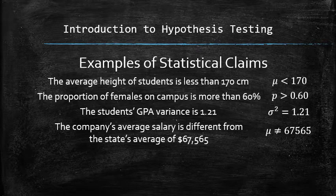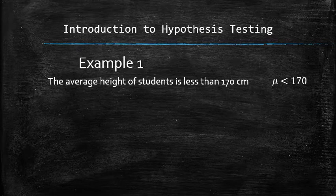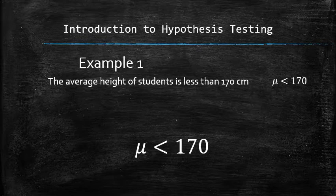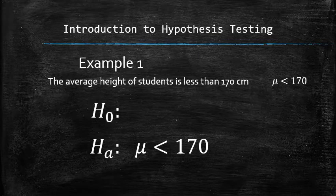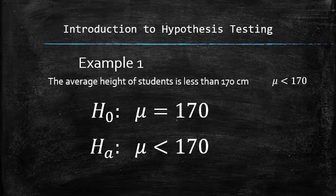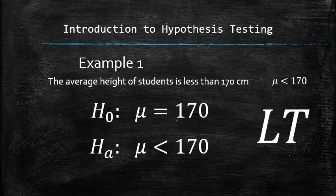Consider the following examples of statistical claims that one may want to test. In this example, the claim is in the form of an inequality. Therefore, it must be stated as an alternative hypothesis. Therefore, the null hypothesis is mu equals 170 and the test is left tail.